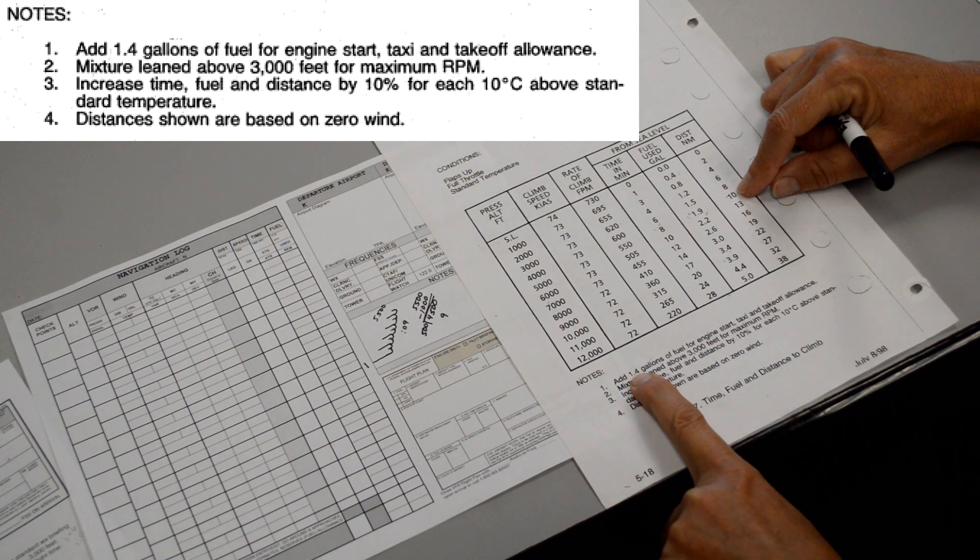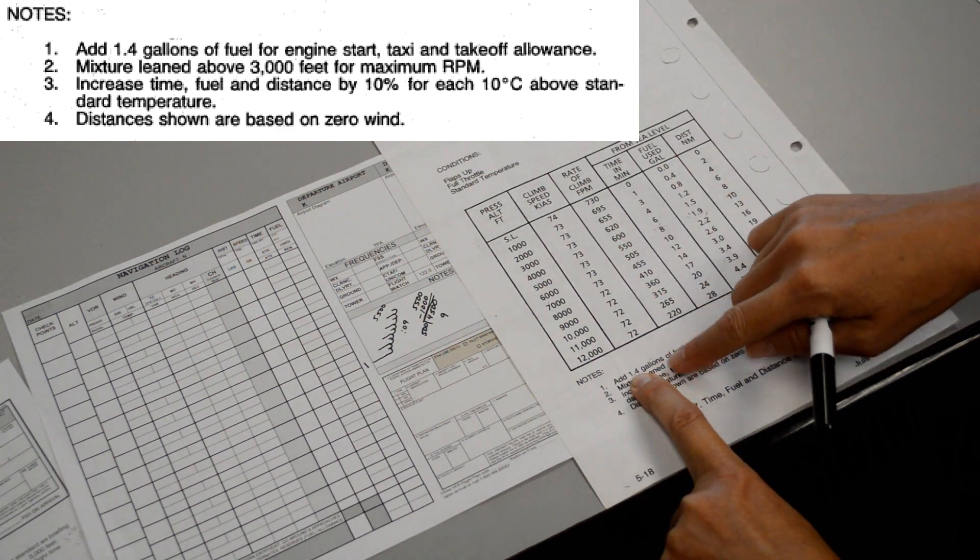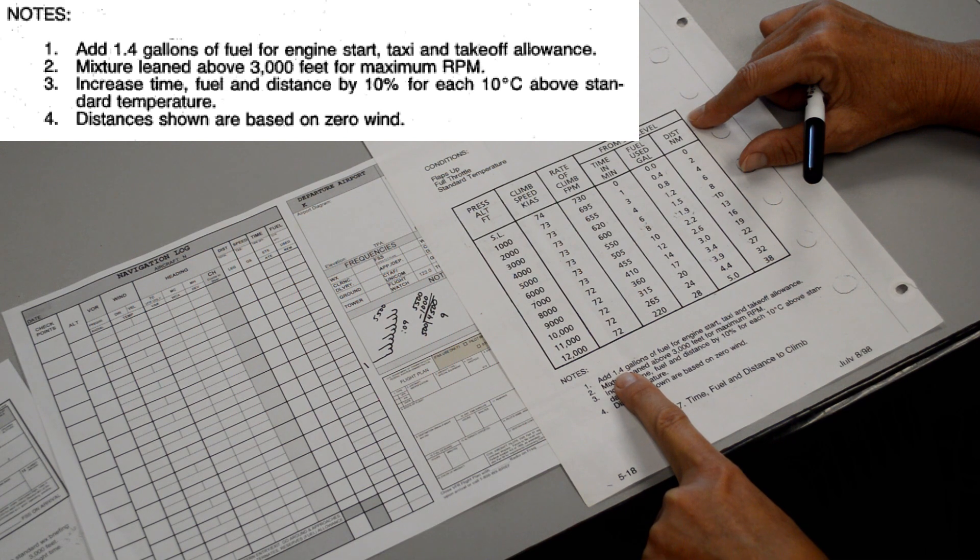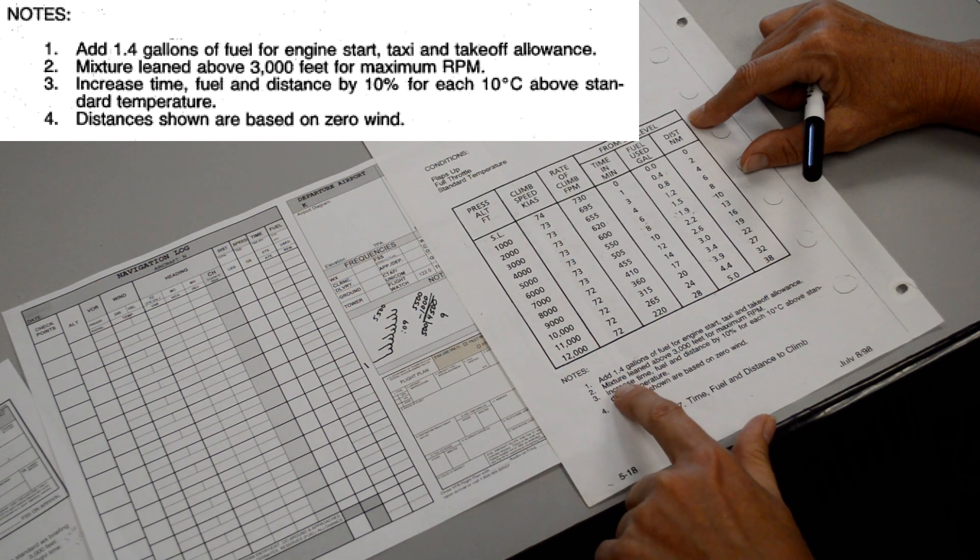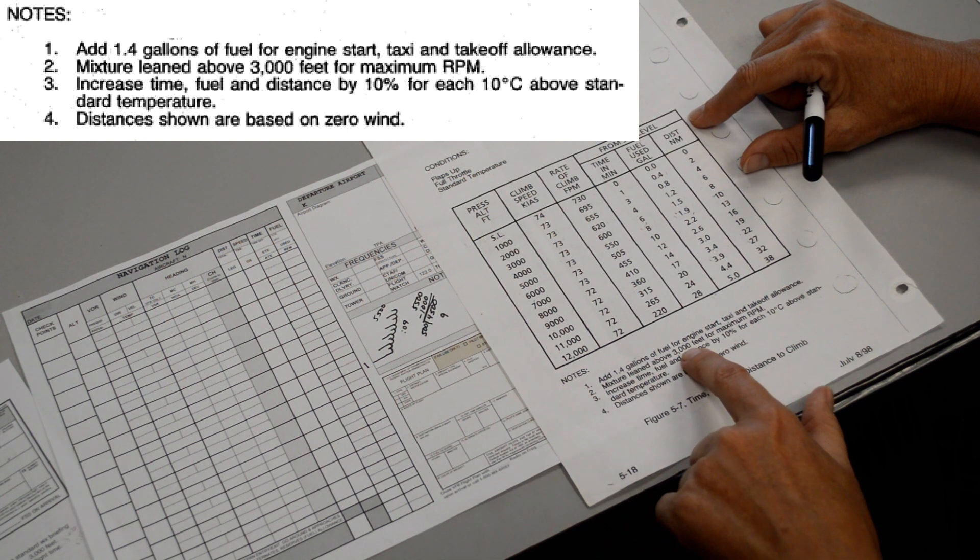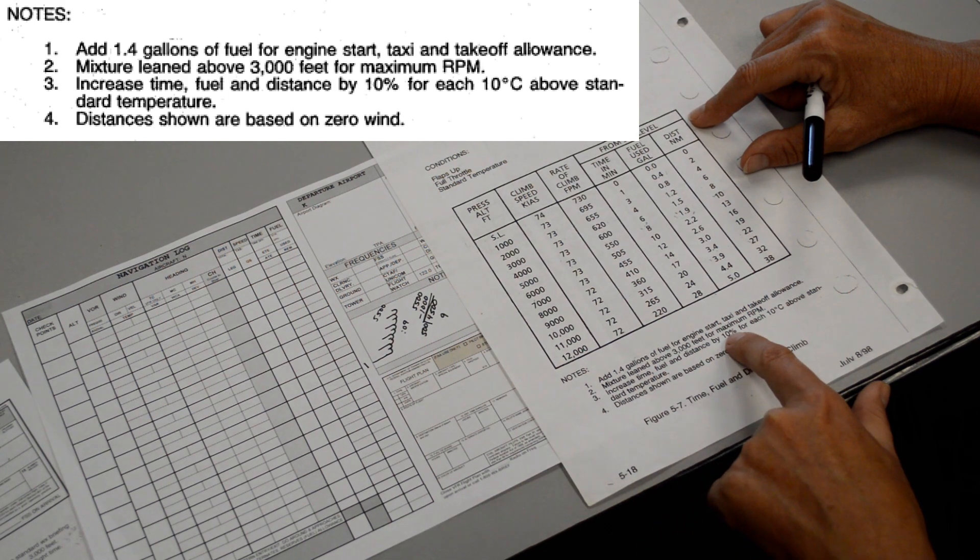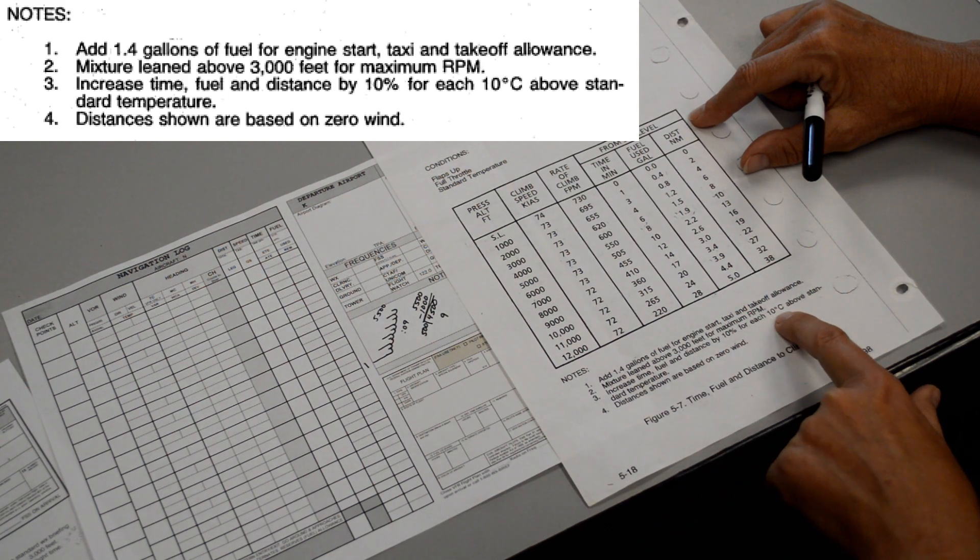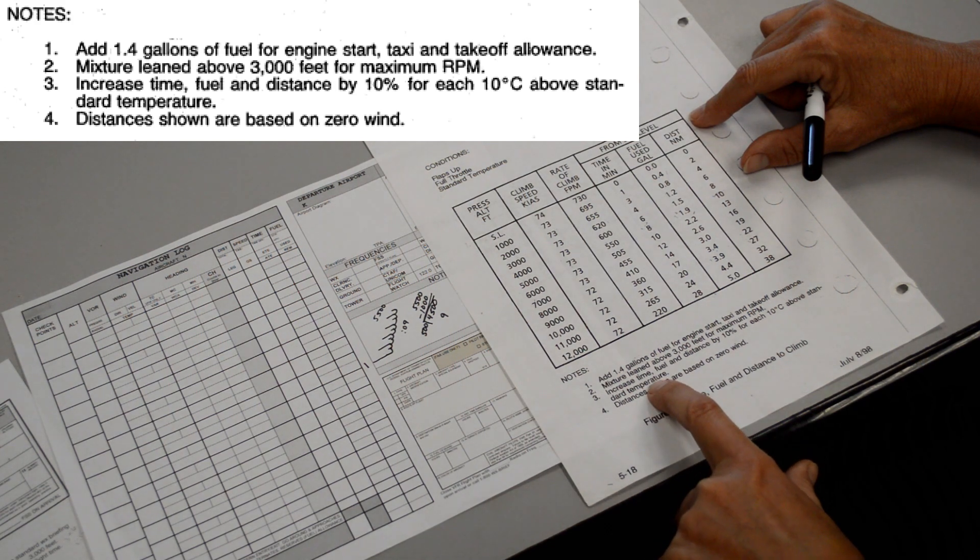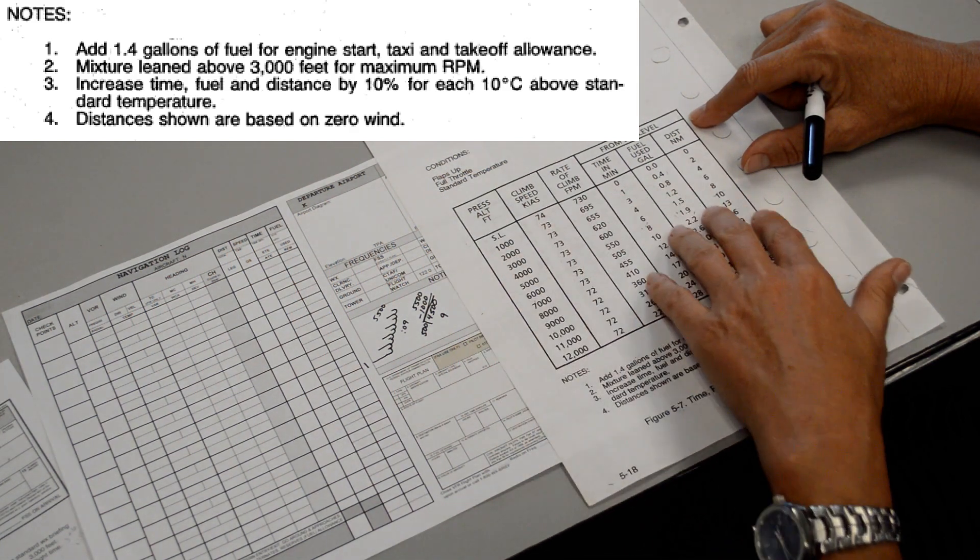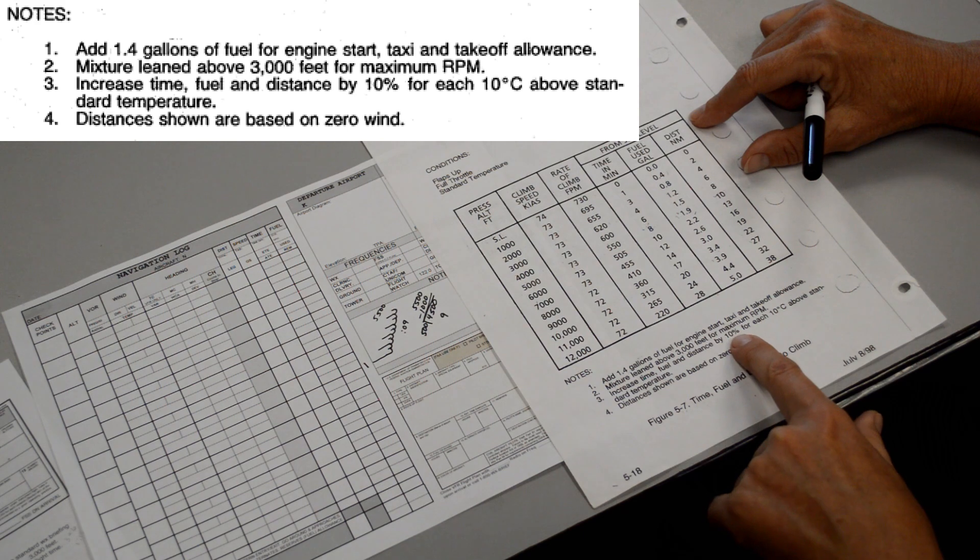On your checkride, your examiner wants to know that you know how to pull the proper numbers off of these charts, but your examiner also is very interested in the fact that you're able to round up to a much safer value. It also says that you should lean the mixture if you're climbing up above 3,000 feet. It says increase time, fuel, and distance by at least 10% for each 10 degrees above standard temperature. Well, the weather briefer told us that the temperature was a good 10 degrees above standard today, so we would definitely want to increase all of these values by at least 10%.